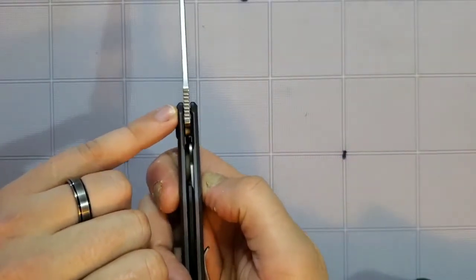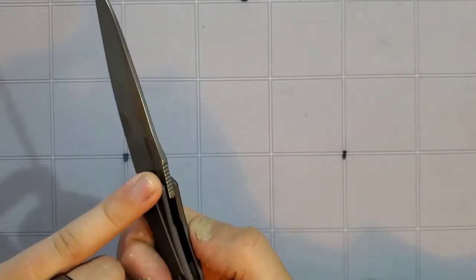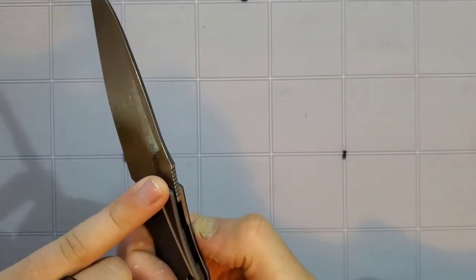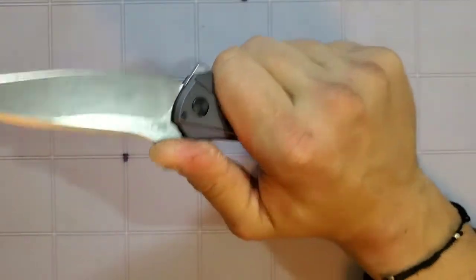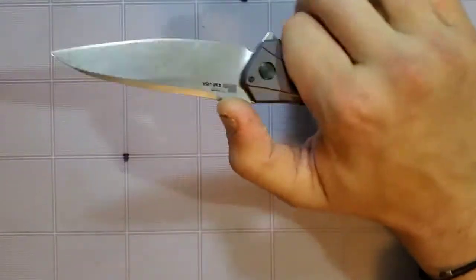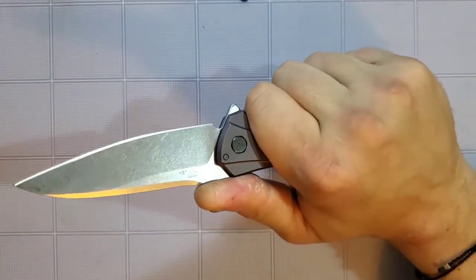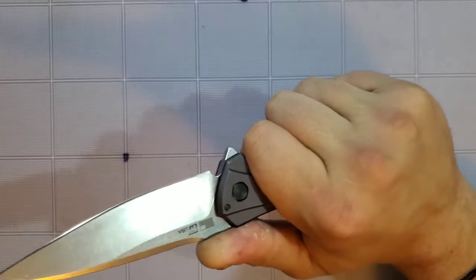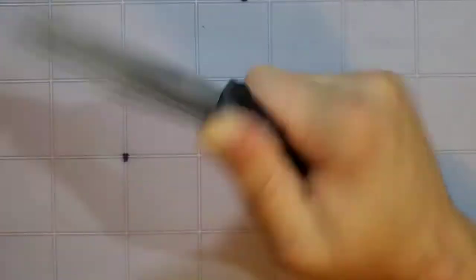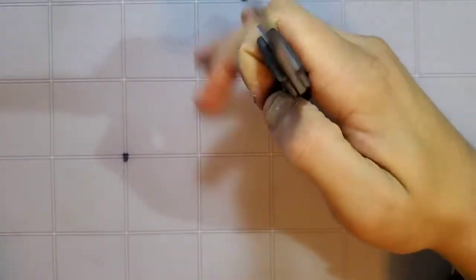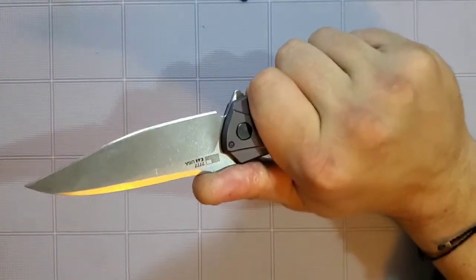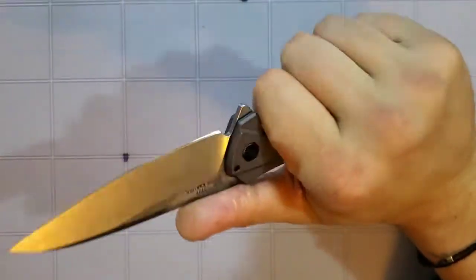So we got a perfect placement of a thumb ramp here with some jimping and the jimping is perfect. It's just typical narrow jimping that has wide spacers in between. So it's not going to cut up your hand, but it does feel darn good ergonomics when you're gripping down and bearing down right here, the ergonomics are great.